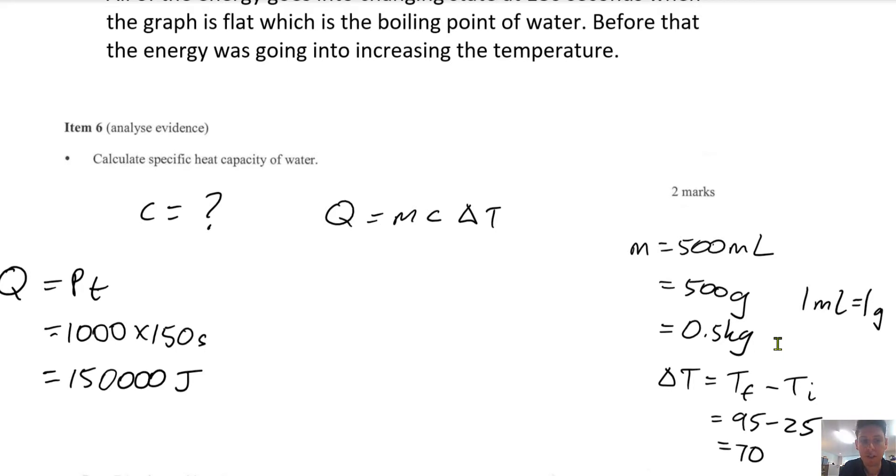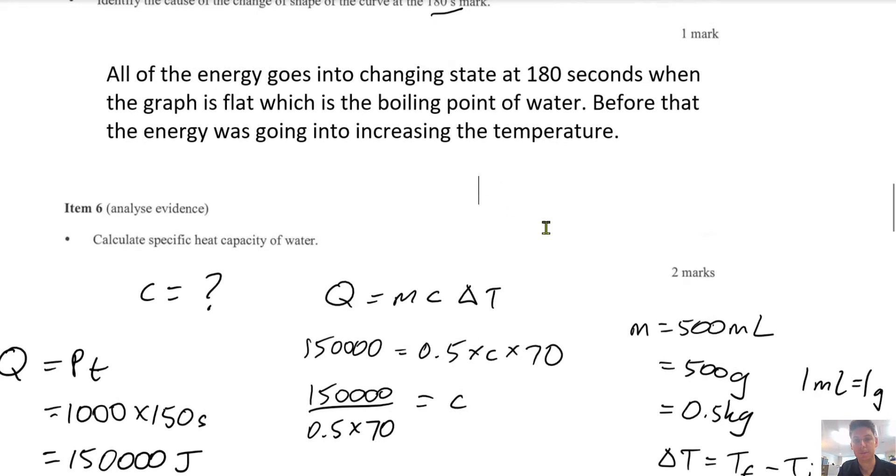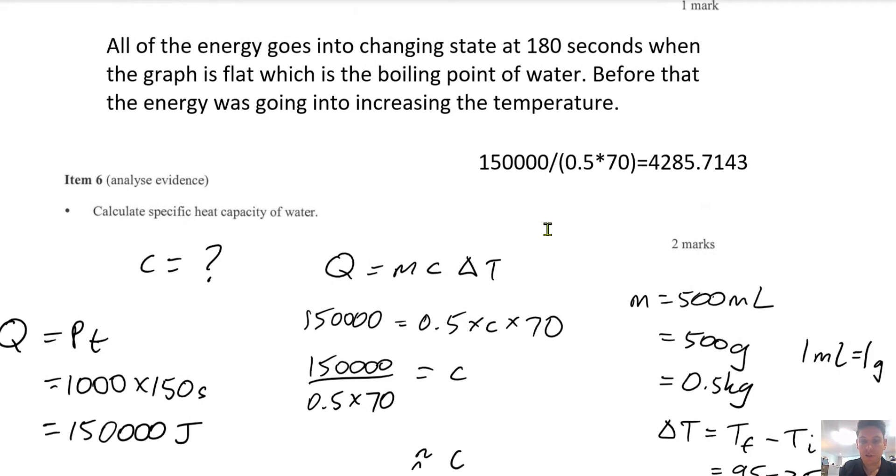So sub everything in: Q, mass, and delta T. Divide both sides by these. So you're left with C on this side. And type it into your calculator. So C is approximately 4,285.71.